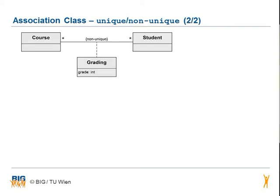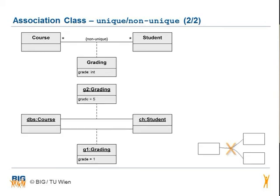This slide shows an example of the difference between a unique and a non-unique class. The example on top shows the class diagram with a non-unique association. In the object diagram you can see that there are two objects G1 and G2 of class grading. They differ in their grade and therefore they are not unique.